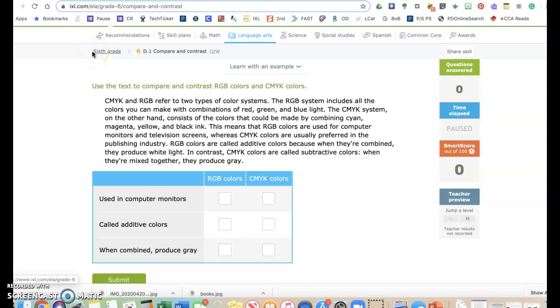Hey everybody, we're going to work on IXLD1 Compare and Contrast today. With Compare and Contrast, you're looking at a piece of writing and deciding which pieces go with the different parts of what you're reading. So, for example, this one says, use the text to compare and contrast RGB colors and CMYK colors.